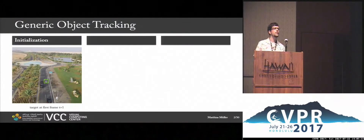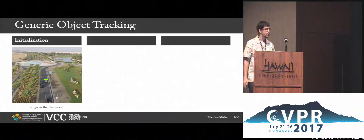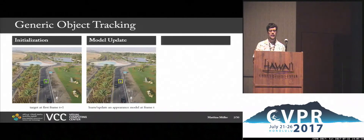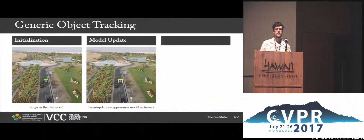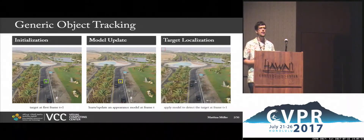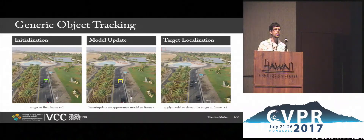For those of you who are not familiar with object tracking, I'll quickly explain what the goal is. At frame T equals one, there's an initialization step where the target of interest is specified. Then at frame T, there's a model update where we learn and update some kind of model. Lastly, there's a step of target localization where in the following frame we apply the learned model, trying to identify the target.